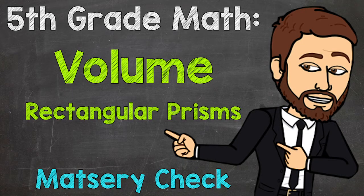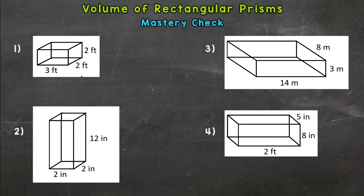Welcome to fifth grade math with Mr. J. Here we are at the volume of rectangular prisms mastery check, where you are going to try four on your own to see if you have volume down. If you're looking for an explanation, instruction, or more help, I dropped the link to my instructional video down in the description. Go ahead and check that out and then come back to the mastery check.